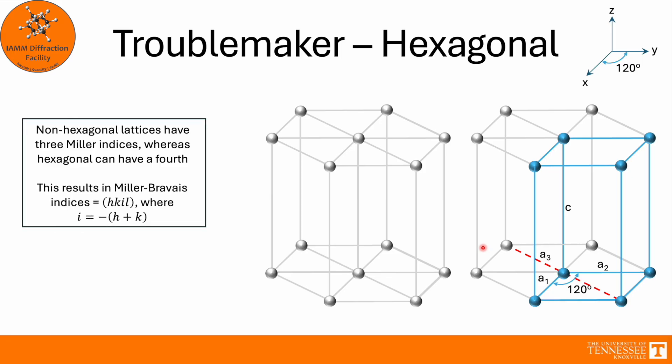So this all results in Miller-Bravais indices, whereas before we just had Miller indices. And now we have (h,k,i,l), where i is simply the negative sum of h and k.